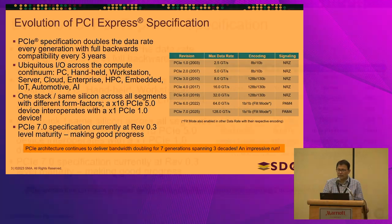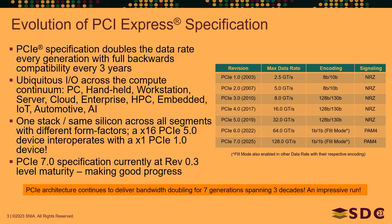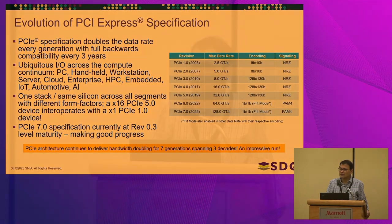From a 7.0 specification point of view, we are at rev 0.3. The targeted timeline for 7.0 is 2025. We give projections and in general we've been pretty good at meeting those. When I started PCIe, we used to think that three generations, one decade, is success. And clearly we're way past that, which is good, because the industry doesn't have to go through a bus transition — those are challenging.